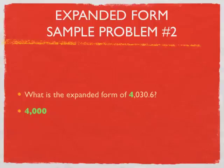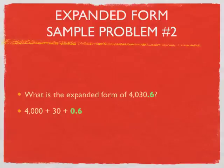Let's take a look at expanded form sample problem number two: what is the expanded form of 4,030 and 6 tenths? In the thousands spot, we have a 4 — so 4,000. The hundreds spot has a 0, which is worth nothing, so we don't write anything for it. In the tens spot we have a 3, and a 3 in the tens spot is worth 30, so we write down 30. The ones spot also has a 0 — moving right along. And finally, in the tenths spot, we find a 6 — six tenths, written as 0.6. Result: 4,000 + 30 + 0.6.